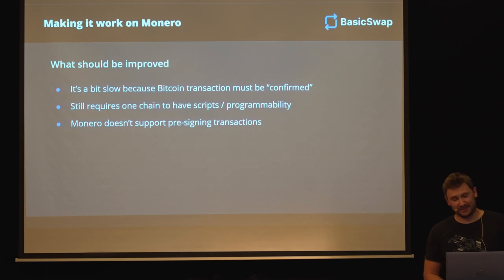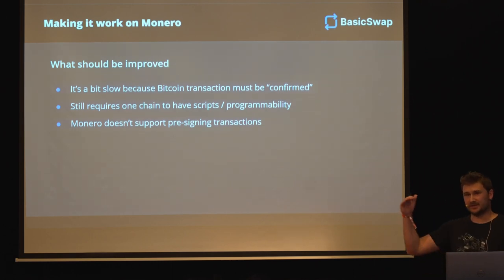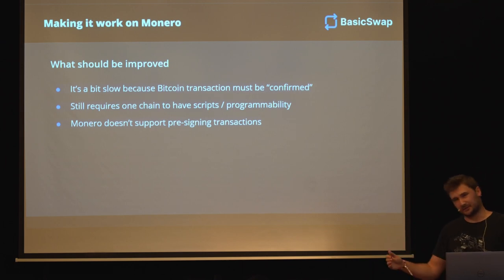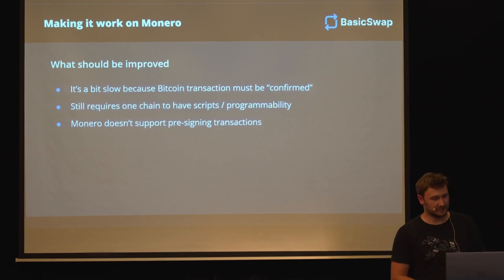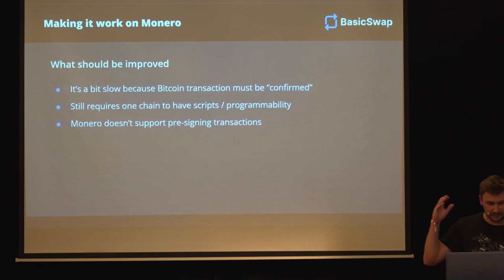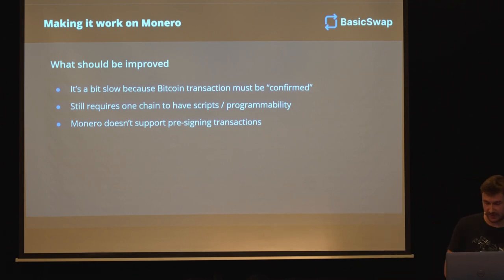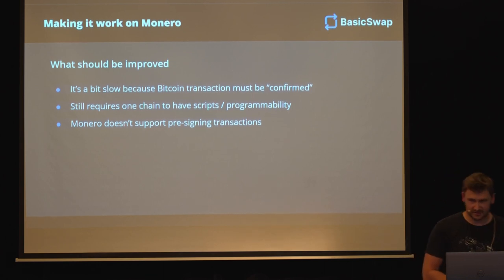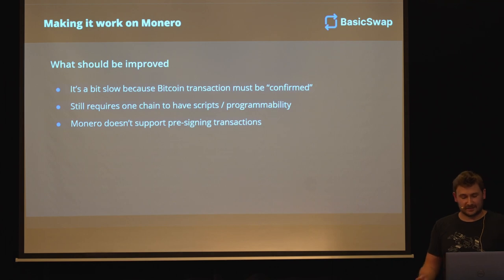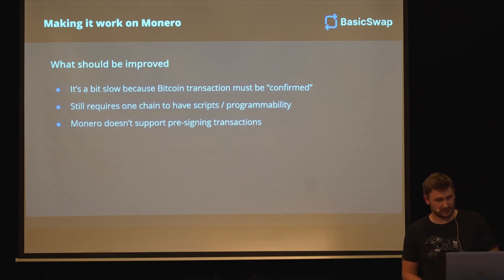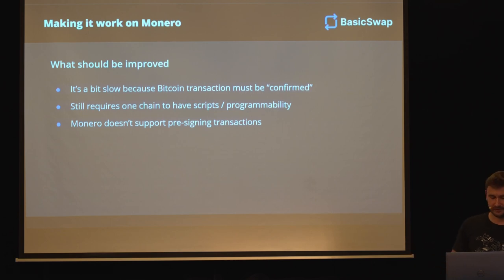So what can be improved? Like I mentioned, the Bitcoin has to go first. We have to wait for it to confirm. Then the Monero gets deposited. Then we have to wait for the Monero to confirm. It's all very slow. And that is something that ideally we could maybe fix. It's all a problem because of the refund issue. Also, this approach still requires one of the two chains to have scriptability or programmability - in this case Bitcoin. And Monero also doesn't support pre-signing transactions, which is a bit of an annoying thing that can be fixed. Essentially we can't do this pre-signing of refund transactions, but if there was a hard fork for it, we probably could fix that.